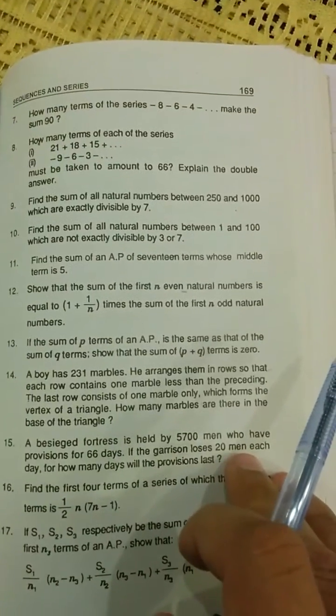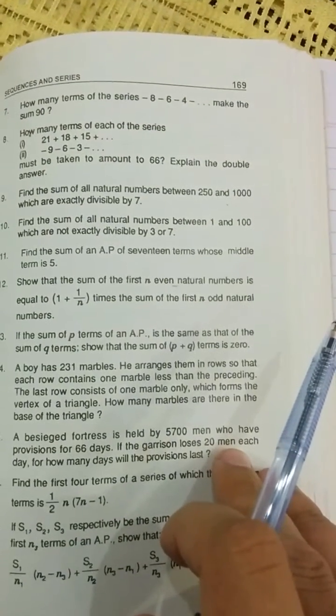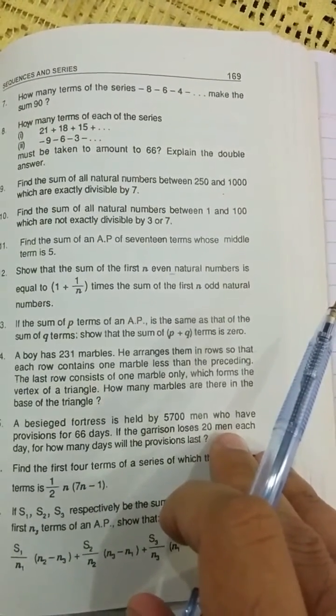Assalamu alaykum, I am Sir Aysan Abdullah Patel. Today I'm continuing Exercise 6.2 from First Year Mathematics. We have question number 9: Find the sum of all natural numbers between 250 and 1000 which are exactly divisible by 7.